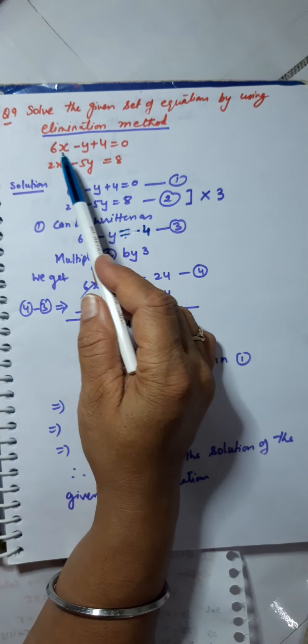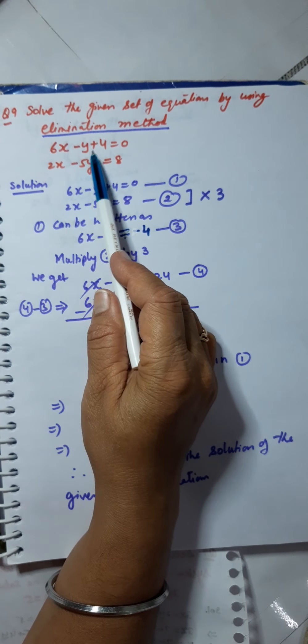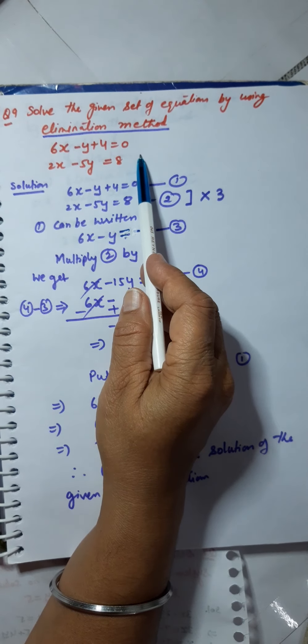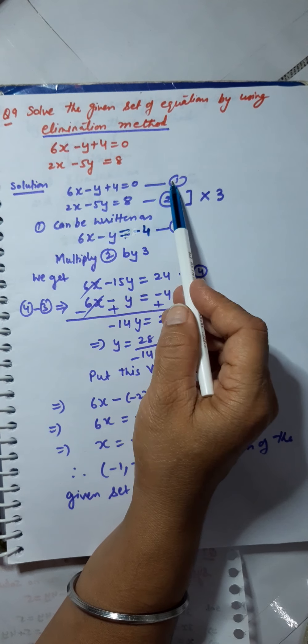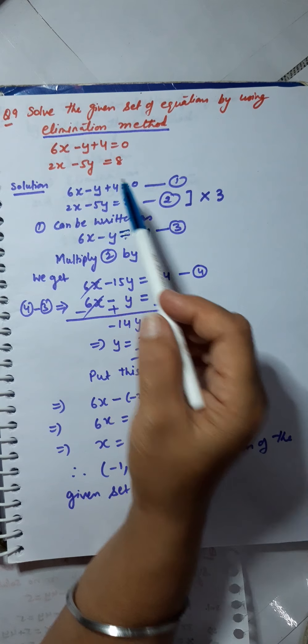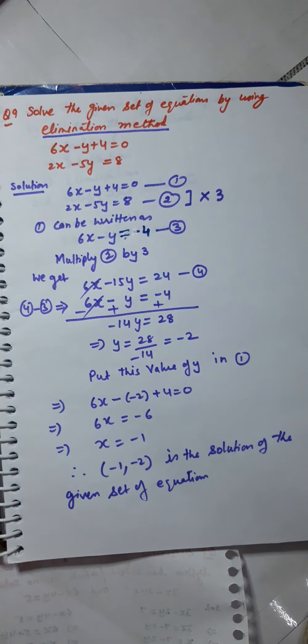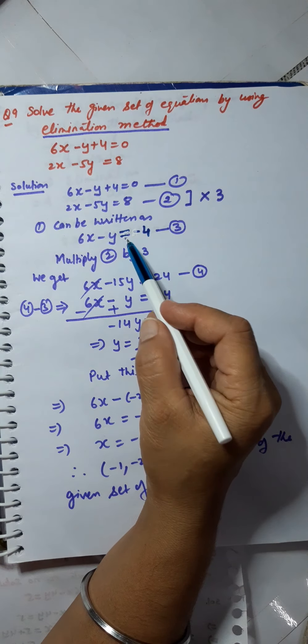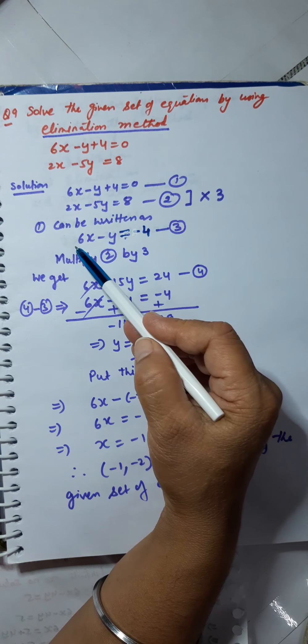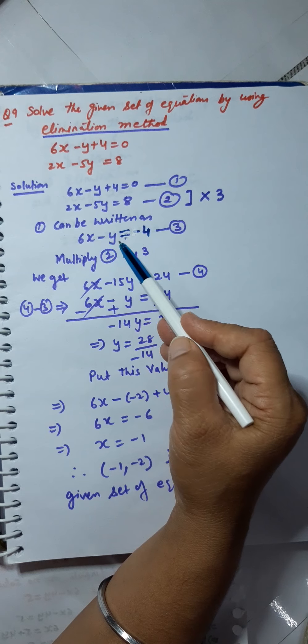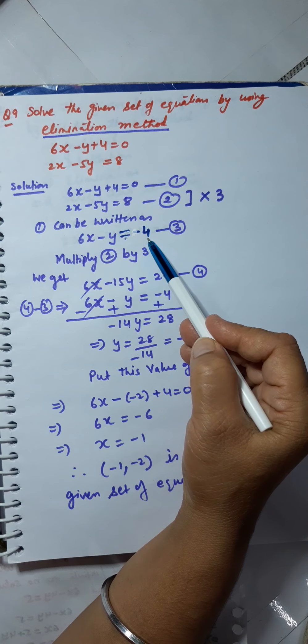The set of equations taken is 6x minus y plus 4 equals 0 and 2x minus 5y equals 8. Number the equations 1 and 2. And also, you must make sure that these equations are written in same form. Now, like here in this one, I have converted it as 6x minus y equals minus 4.